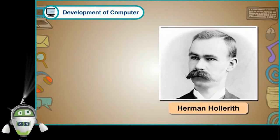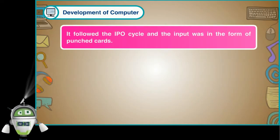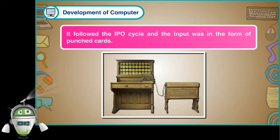Herman Hollerith. Herman Hollerith, an American statistician, invented the tabulating machine in the late 18th century. It followed the IPO cycle and the input was in the form of punched cards.